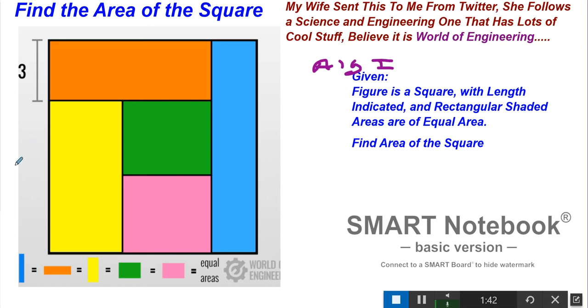If we just call this x, because that's what we tend to do when we don't know something, we know that this whole length is x plus 3. So the area of the square is x plus 3 squared, which is x squared plus 6x plus 9. That's not going to get us anywhere, so we need to come up with a different strategy.